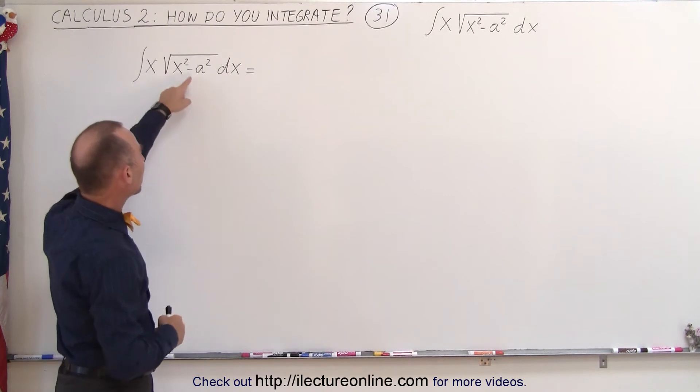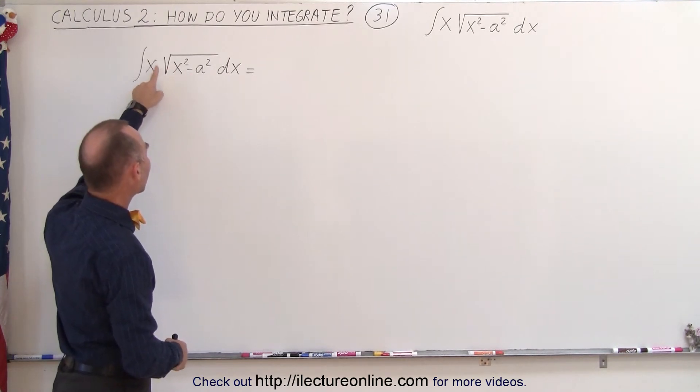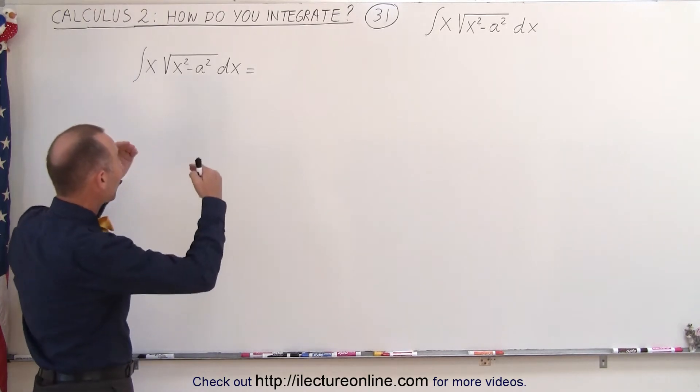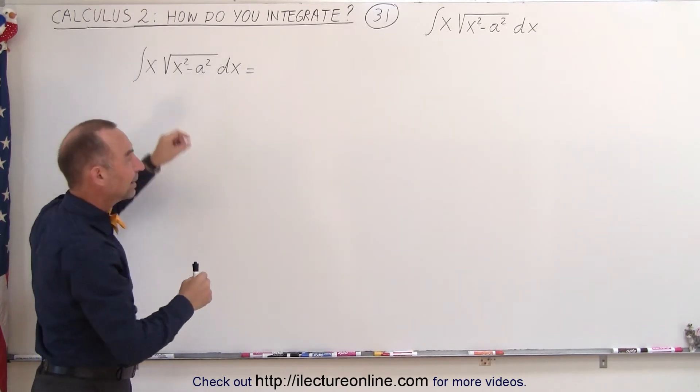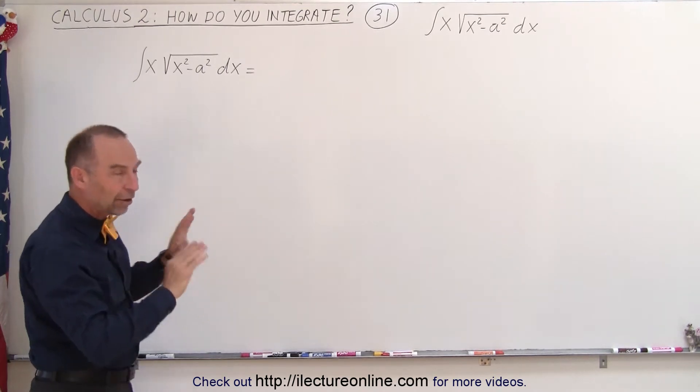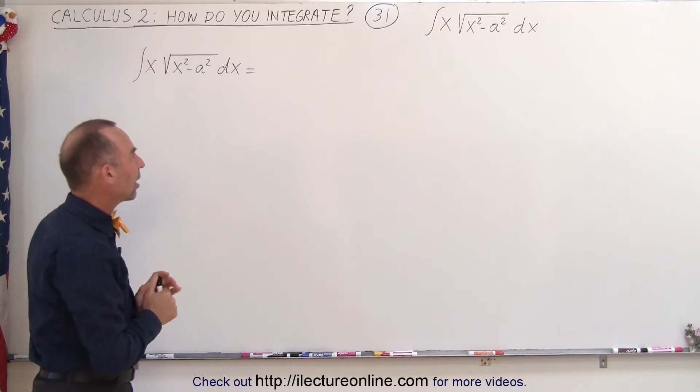When it's in the numerator like this, and then you have an x on the outside of that radical, that makes it actually pretty simple. Now if we were to write that as 1 over that, then it becomes a lot more difficult, and you'll see the different techniques that we employ for that. So I just want to show it to you as a contrast.